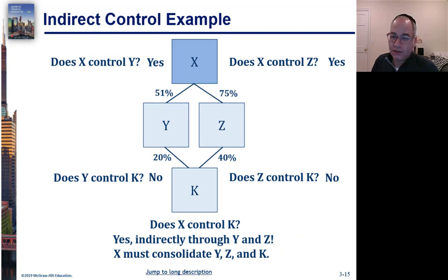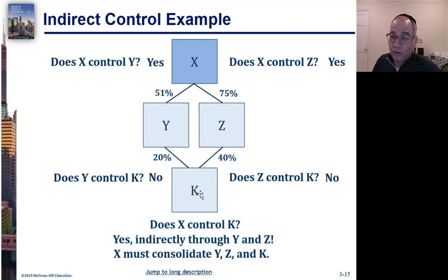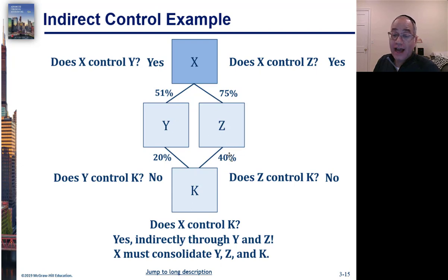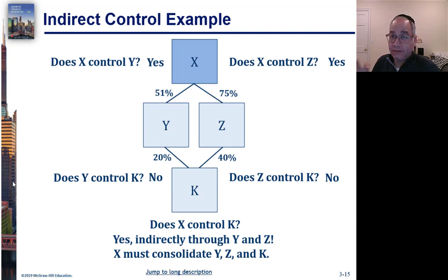Here's an example where all of this gets really complex. X controls 50% of Y and 70% of Z. Then Y owns 20% of K, and Z owns 40% of K. Does X control Y? Yes. Does X control Z? Yes. But does Y control K? No. Does Z control K? No. But X controls K because X controls both Y and Z, and Y and Z together have 60% of K. Therefore X has indirect control over K, and X must consolidate K. So we look not only for direct control but also for indirect control.